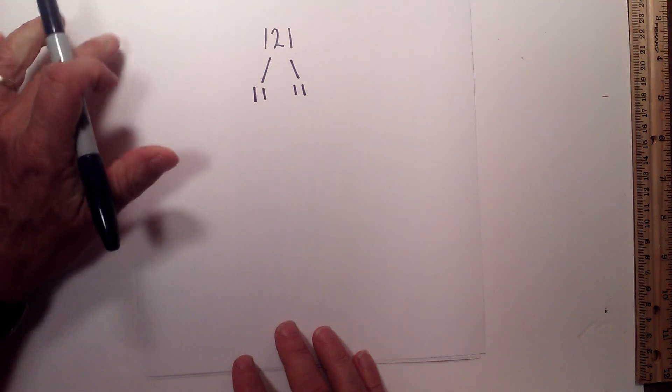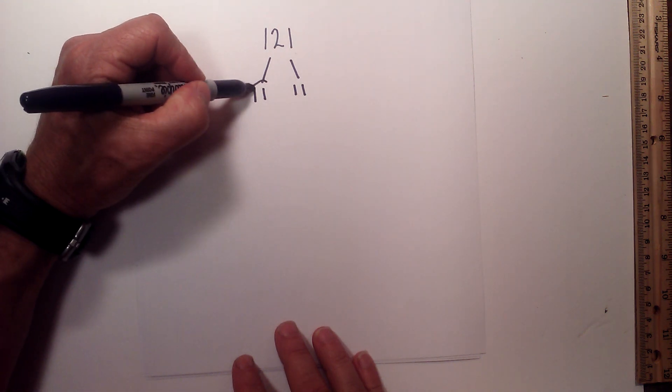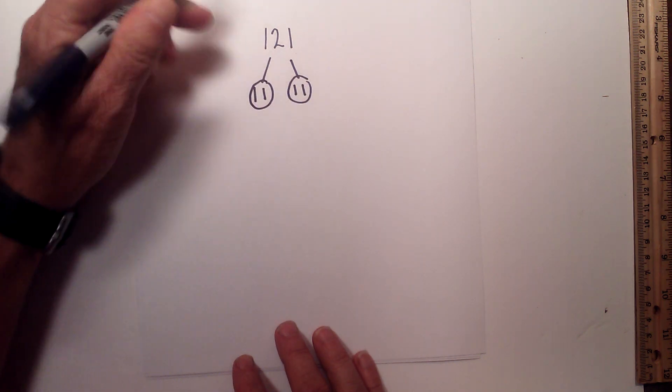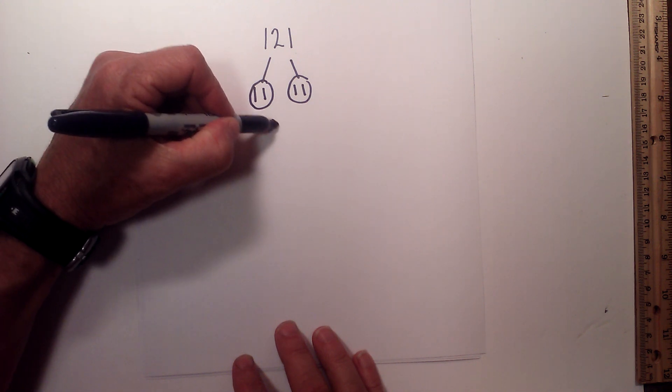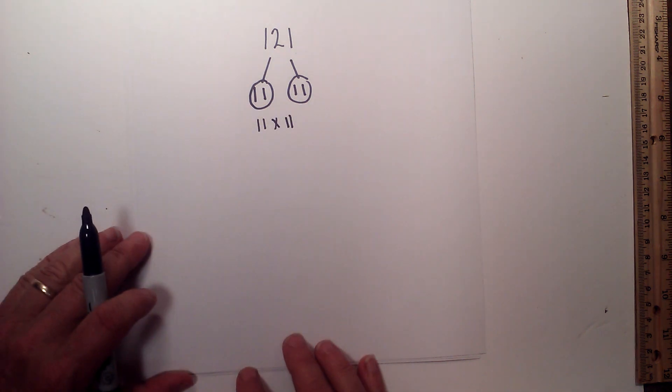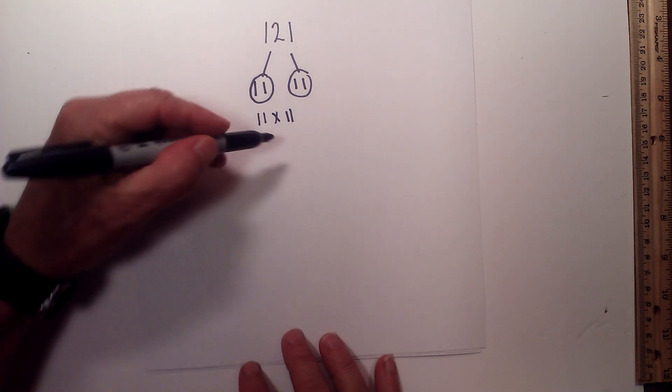11 times 11 equals 121. They are both primes so I will circle them. So the prime factorization of 121 is 11 times 11. Now let's look at 132.